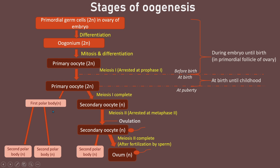At the same time, the first polar body may divide to form two haploid second polar bodies, though this may or may not occur. All second polar bodies will degenerate, and the ovum will develop into a zygote, then an embryo, and then a fetus. If no fertilization occurs, the secondary oocyte will degenerate and be discharged from the uterus during menstruation.